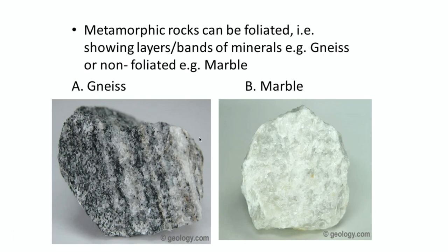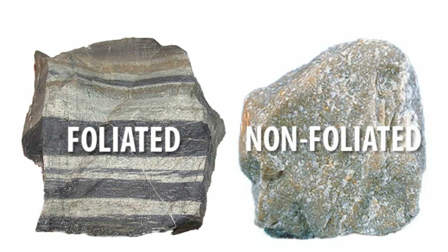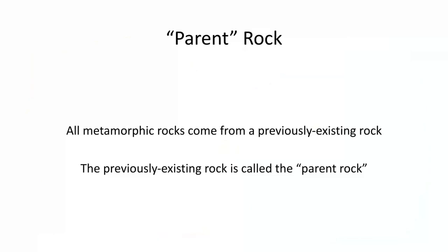So foliated, non-foliated: foliated is stripy, non-foliated is not stripy. All metamorphic rocks, because they come from a previously existing rock, have what is called a parent rock. The rock that it came from — the previously existing rock — is called the parent rock.